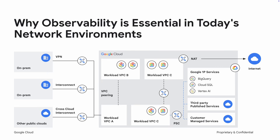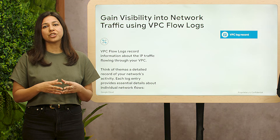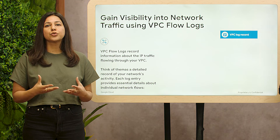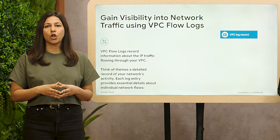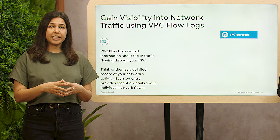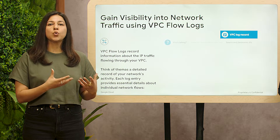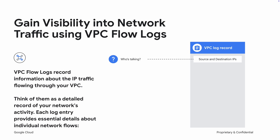VPC flow logs provides a comprehensive solution, giving you visibility into the traffic within, entering, and leaving your GCP environment. VPC flow logs record information about the IP traffic flowing through VPC — think of it as a detailed log of network conversations happening within your network. Each log entry provides crucial details, such as who is talking to whom, identified by the source IP and destination IP addresses.